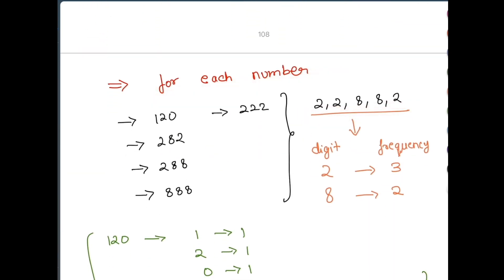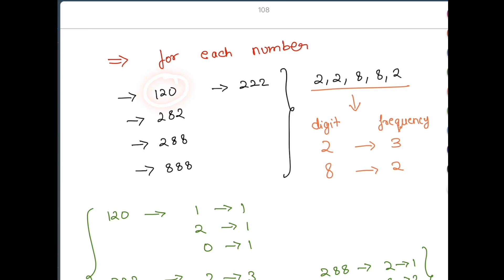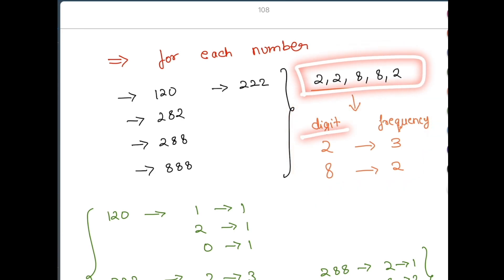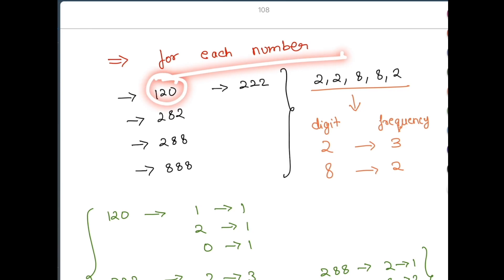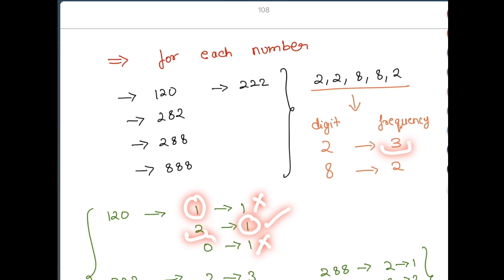Let's verify this with example two ([2, 2, 8, 8, 2]). First, store the frequencies of digits in the input: three 2s and two 8s. When our loop reaches 120, we check: 120 needs one 1, one 2, and one 0. We have three 2s, but no 1 and no 0 in the input — so 120 is not valid and won't be included in our answer.